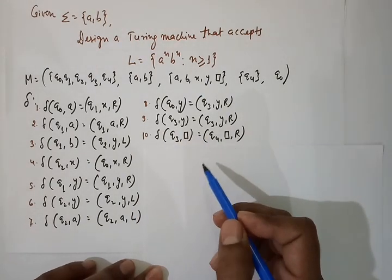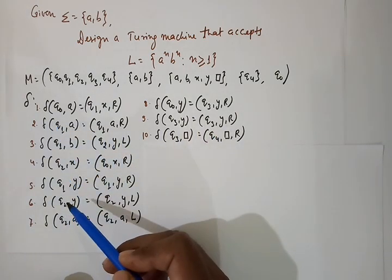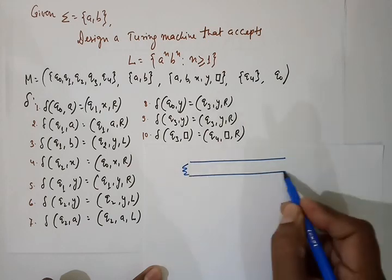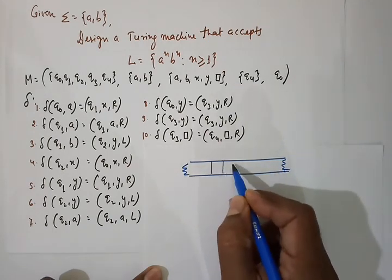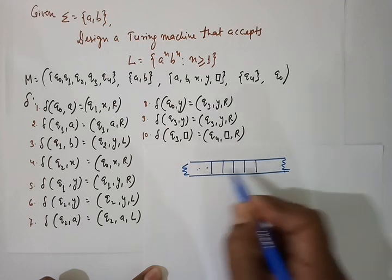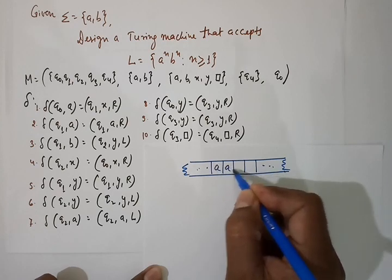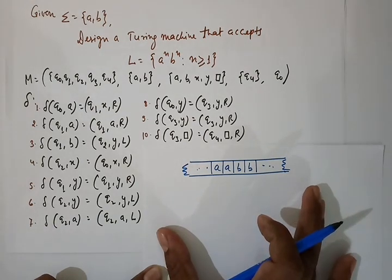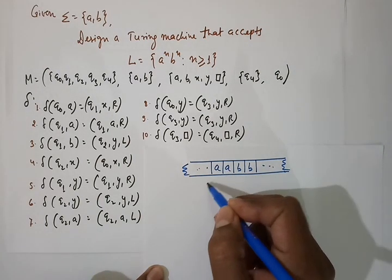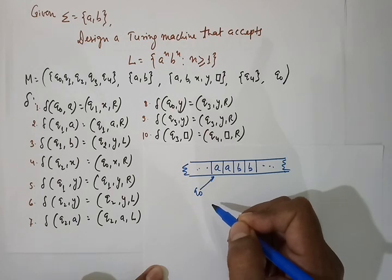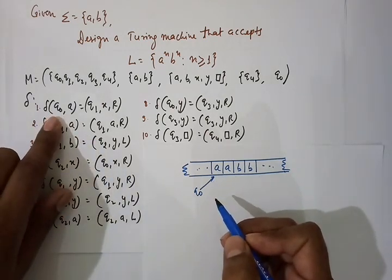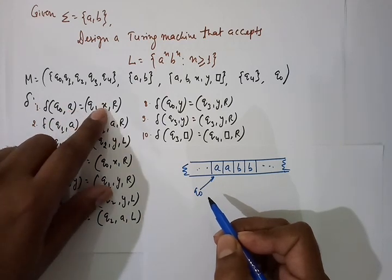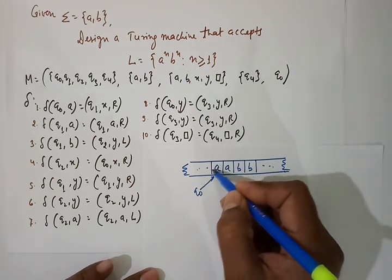There are 10 transition rules for our Turing machine. We will execute them using the example input 'AABB'. In state q0 reading 'A', rule number 1 applies: we move to state q1, replace A with X, and move one cell right. Now in state q1 reading 'A', rule number 2 applies: state stays q1, A is replaced by A, and we move one cell right.